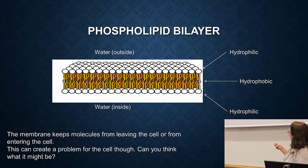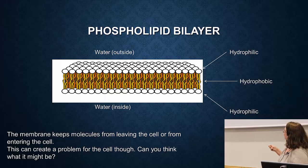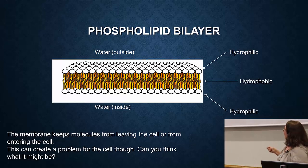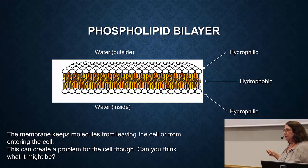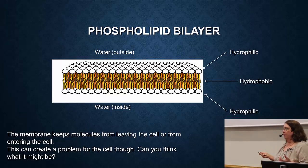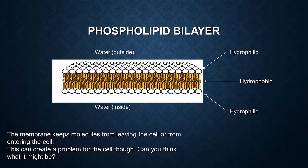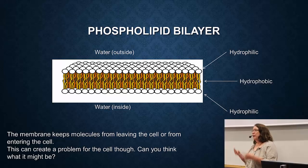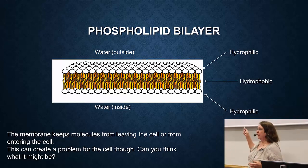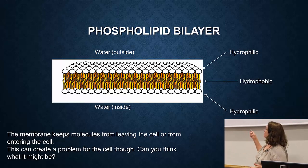The membrane keeps molecules from leaving the cell or entering the cell — molecules on the outside can't go in, and from the inside can't go out. However, that can create a problem for the cell. If it's completely sealed off from the outside world, it can't take up energy — specifically food in a general sense. It can't take up anything from the outside into the cell, and it can't get rid of anything toxic. So you have to have some way of going through a membrane.